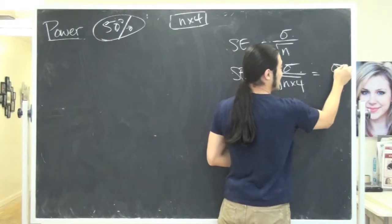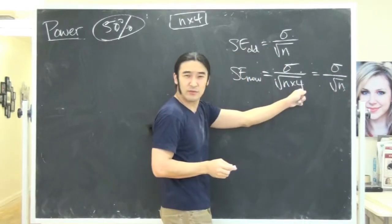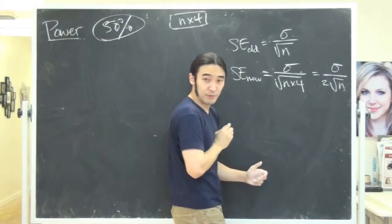And let's rewrite this. So isn't that sigma over the square root of n? But then the square root of 4 is 2. So there's a 2 here, right?